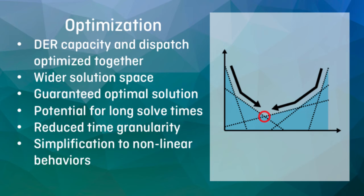Optimization, on the other hand, as used by DerCam, does not rely on user-defined rules for dispatching. Rather, the DerCam model defines constraints for how technologies can and cannot operate, and then lets the optimization determine how they are dispatched at each point in time by adhering to these operational constraints. This means the optimization approach is able to search across a wider solution space to find an optimal design. However, to keep the optimization problem size manageable, DerCam must incorporate some simplifications that can reduce the level of detail compared to simulations.